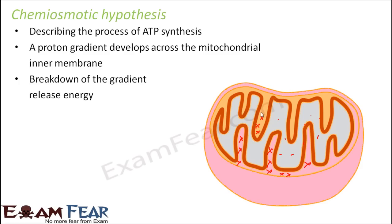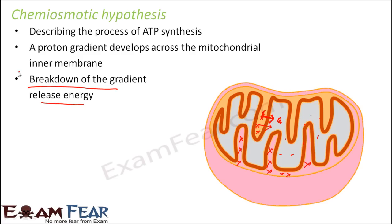Breakdown of this gradient releases energy. Right now the gradient is there — this portion has very high concentration and this portion has very less concentration. But as soon as the protons start to flow from this region to the other region, the proton gradient will begin to decrease. This breakdown of the gradient will release energy, which will be utilized to synthesize ATP. That is the concept of the chemiosmotic hypothesis.